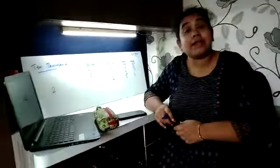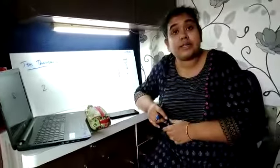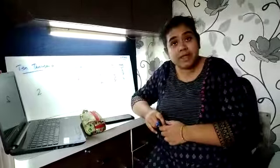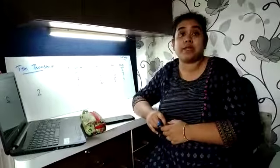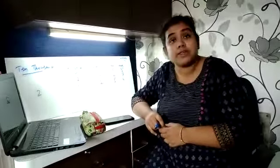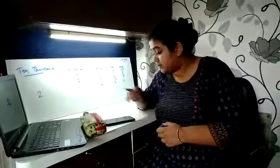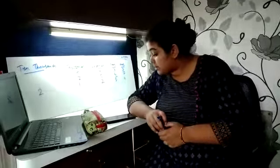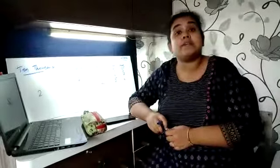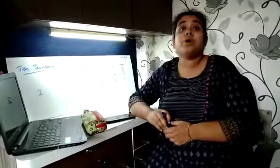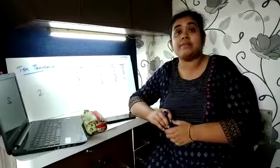The next sum: 3143. The underlined digit is 3. That means the place value of 3 is 3000. Next number C: 7248. The underlined digit is 4. So the place value of 4 is 40.